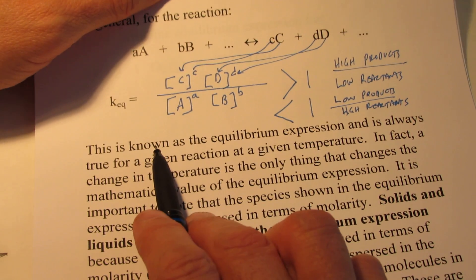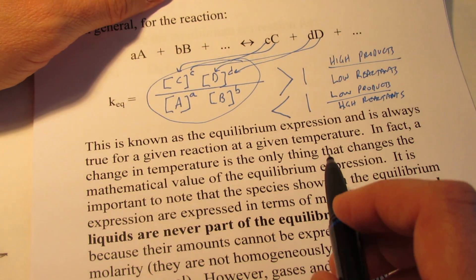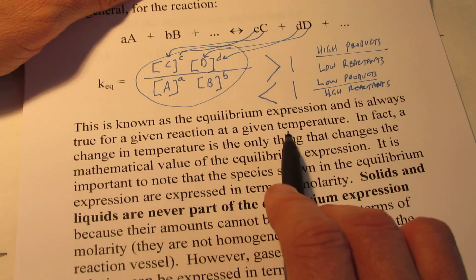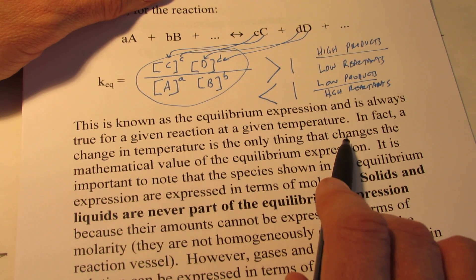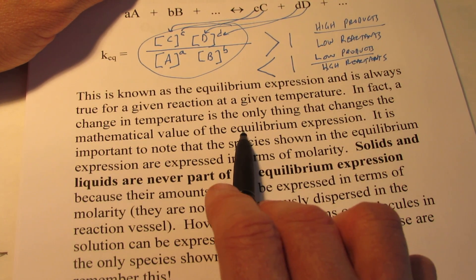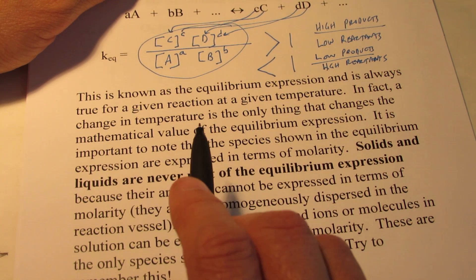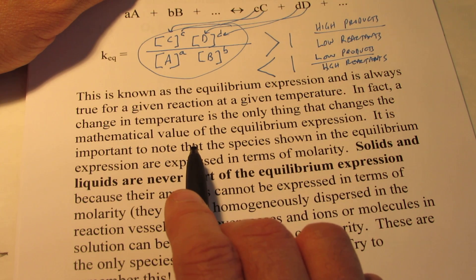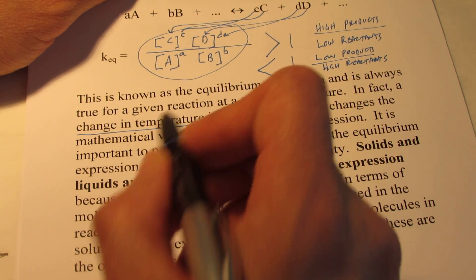This is known as an equilibrium expression — putting products over reactants — and it is always true for a given reaction at a given temperature. In fact, a change in temperature is the only thing that changes the mathematical value of an equilibrium expression. Remember this: what's the only thing that changes the numerical value of the equilibrium constant for a particular reaction? That would be a change in temperature.